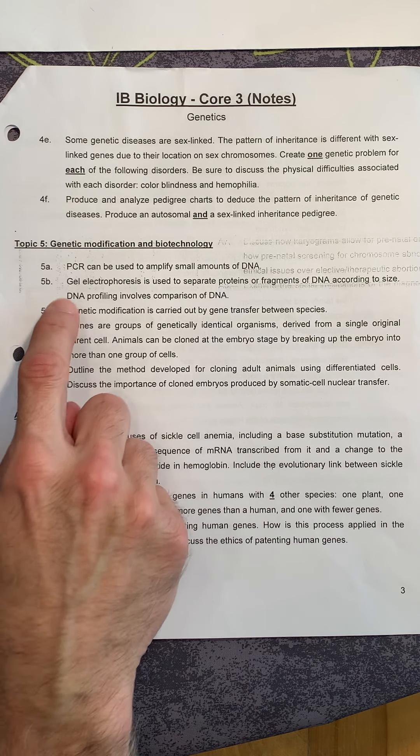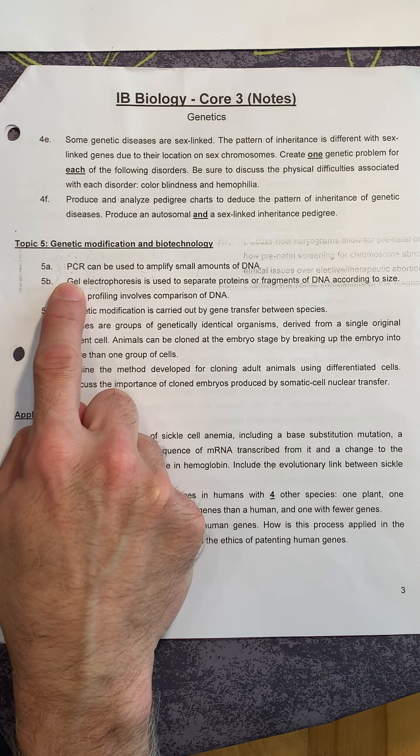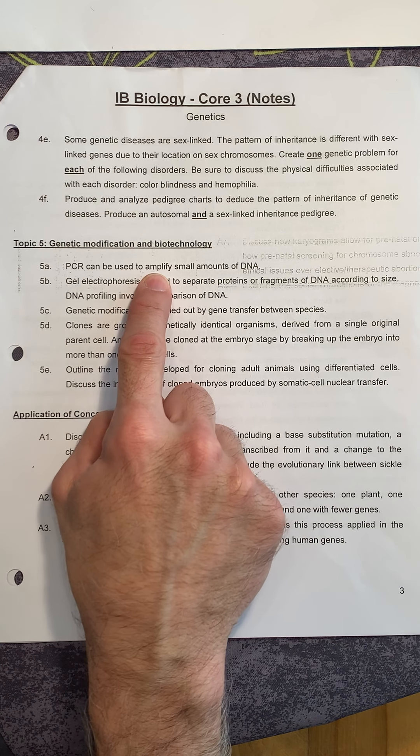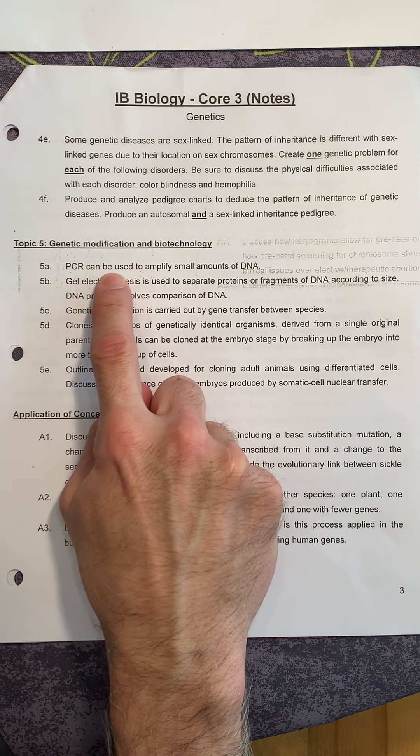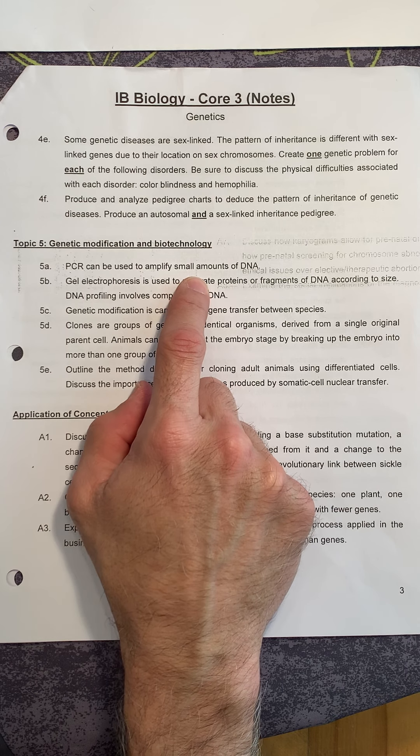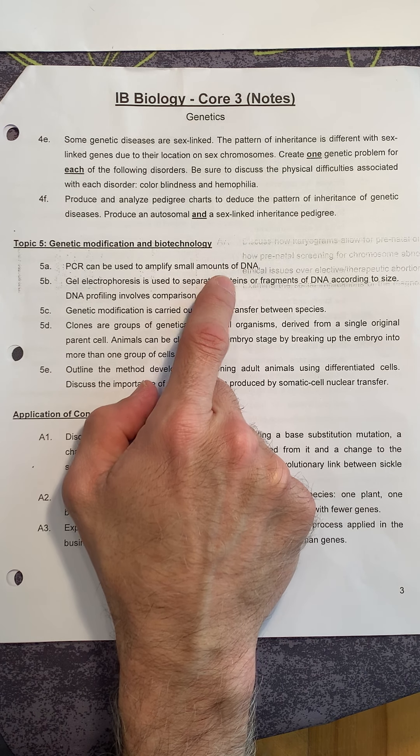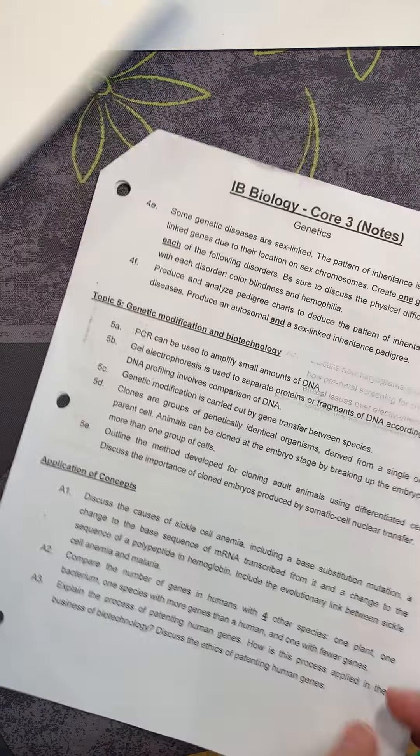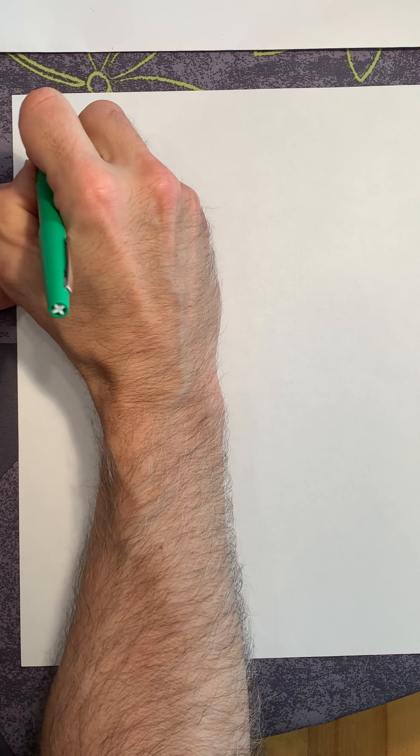So it says PCR, which stands for polymerase chain reaction, can be used to amplify, to make samples larger. So PCR can be used to amplify small amounts of DNA. So if you have a small amount of DNA, and you want a large amount of DNA, it's an extremely common technique in the lab to use PCR. So let's see how PCR works. So question 5A.